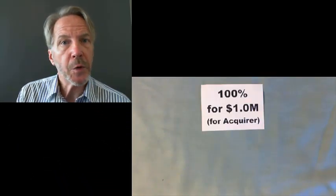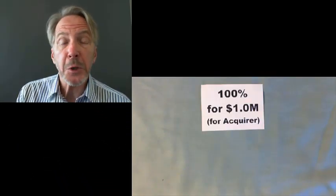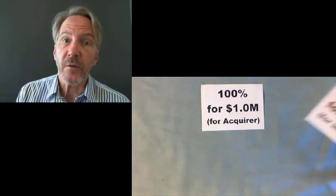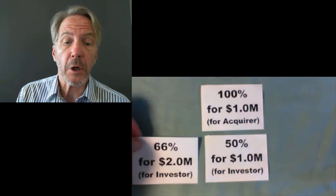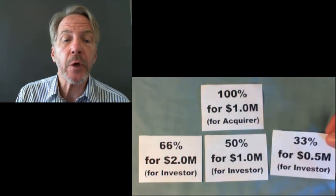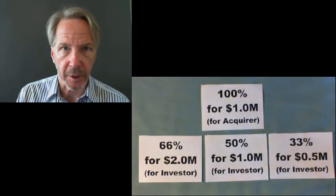Valuation is not so obvious when a fractional amount, less than 100%, is available for sale. Investors have to calculate valuation differently than an acquirer. For example, to an investor, the valuation of a company is $1 million if 50% is offered for $1 million, 66% is offered for $2 million, or 33% is offered for $1.5 million. I will show you how to make sense of this and how to calculate valuation from an investor's perspective.